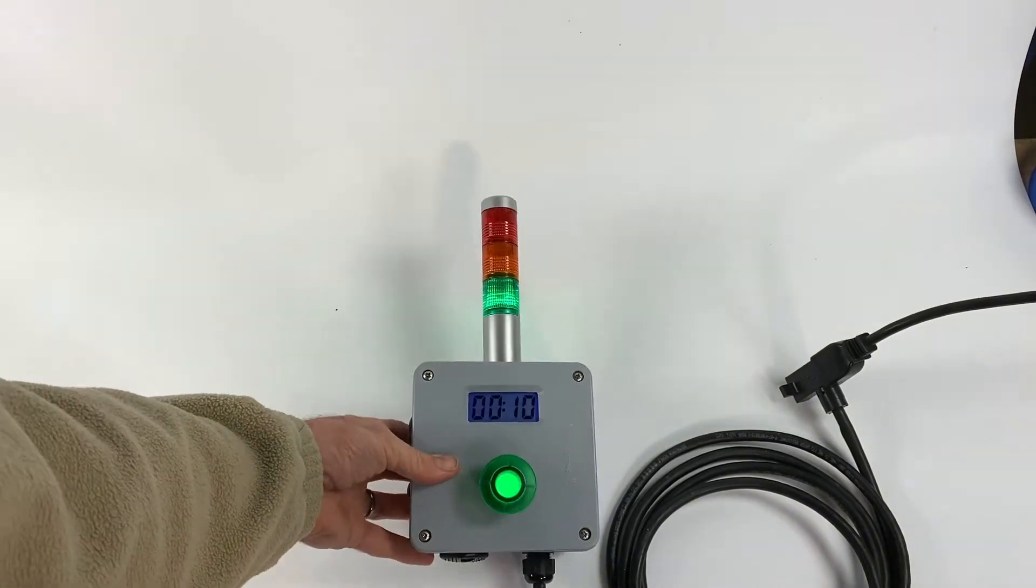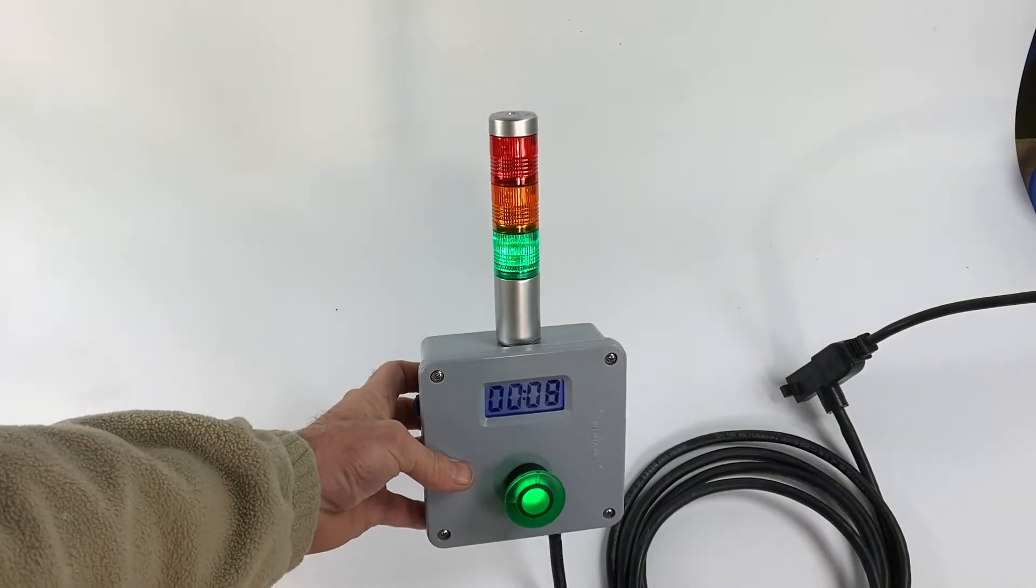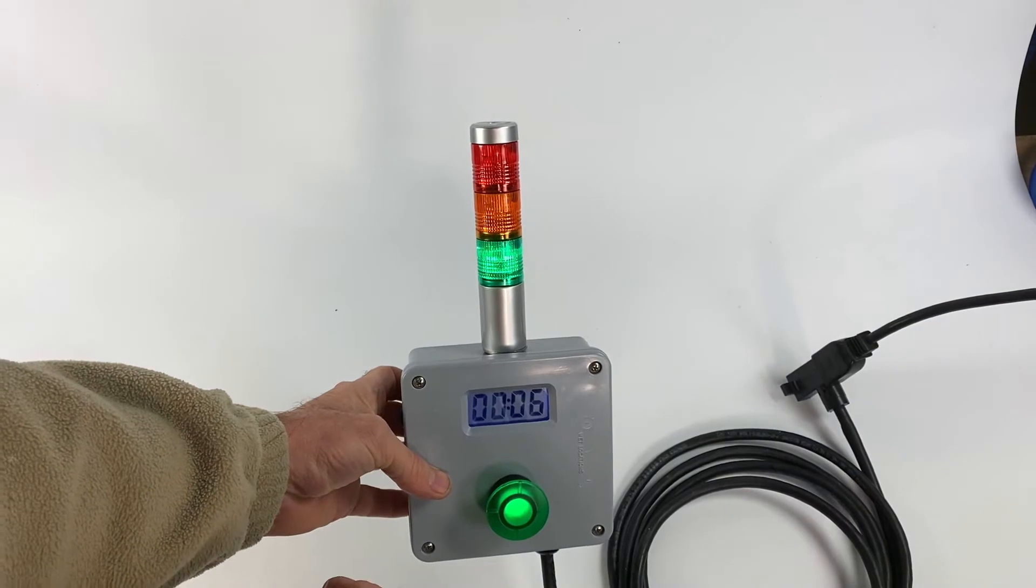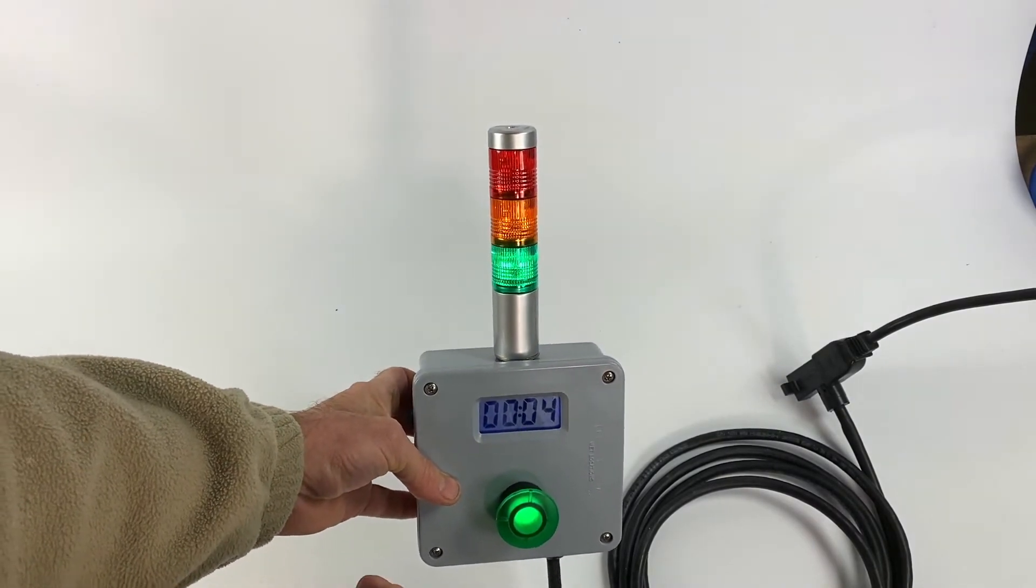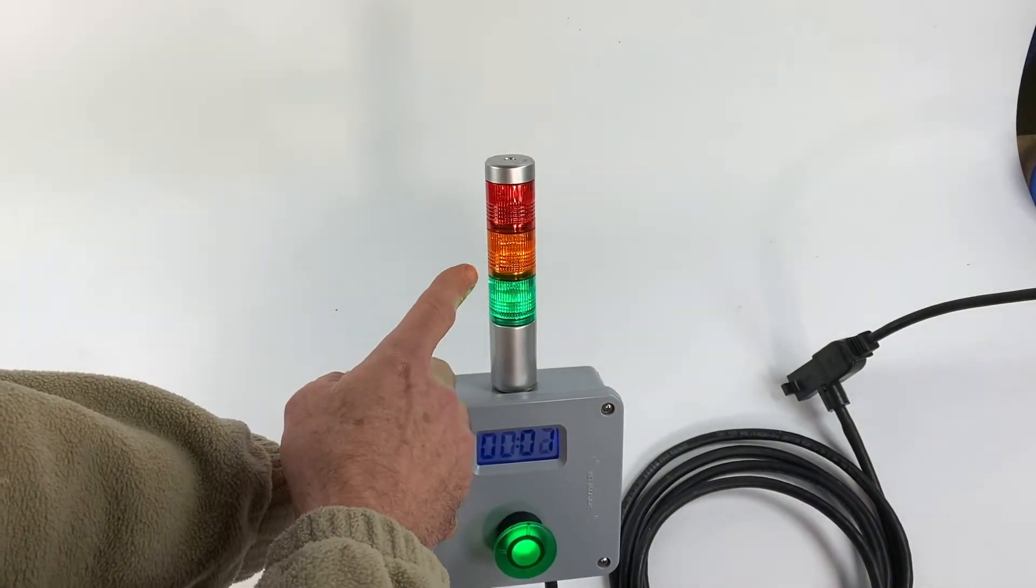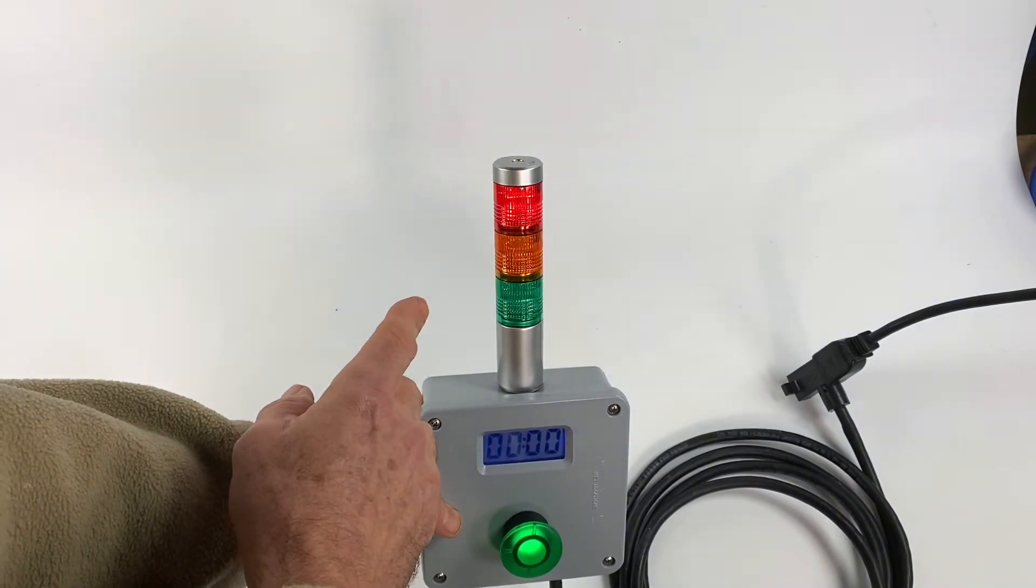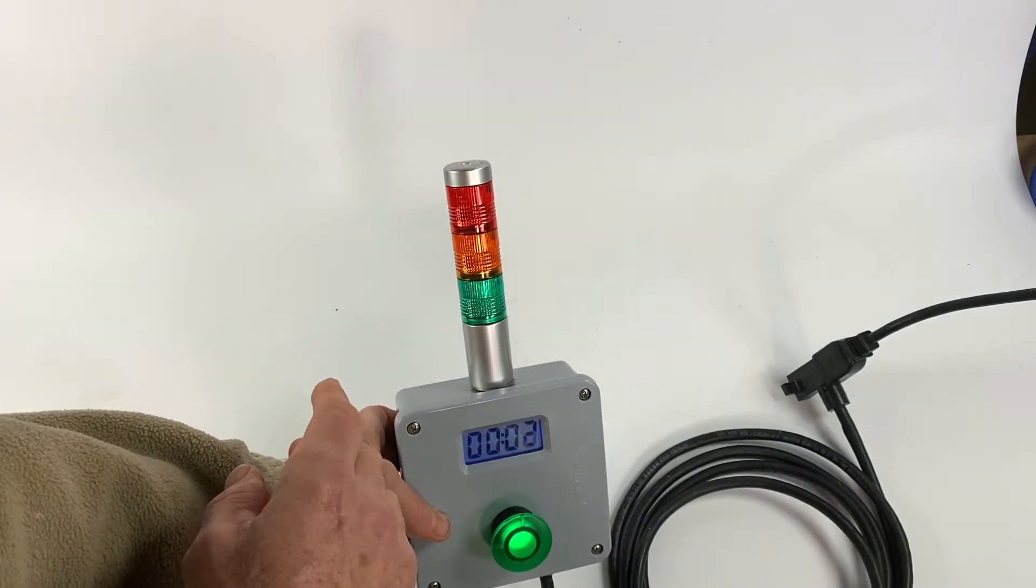There's the green light while it's counting down, and then at four seconds there's the early warning light to call the operator. At the end of the cycle there's the flashing light. Notice it's counting up now.